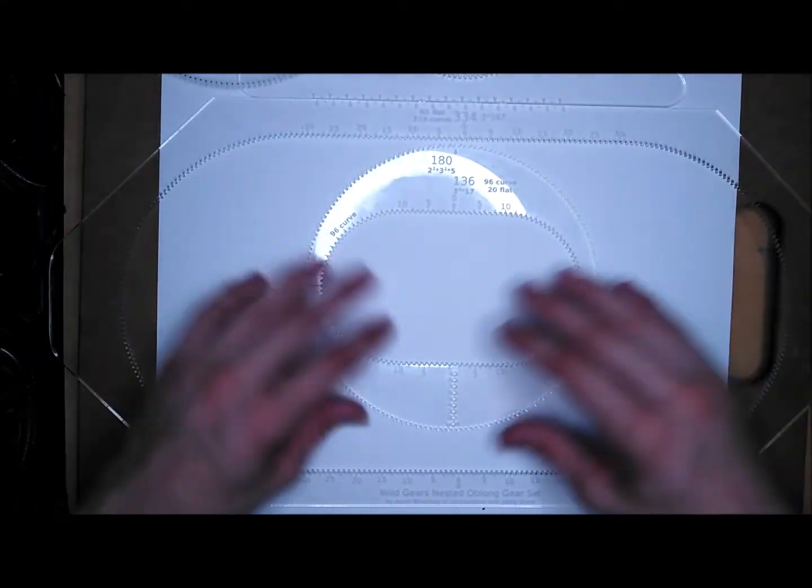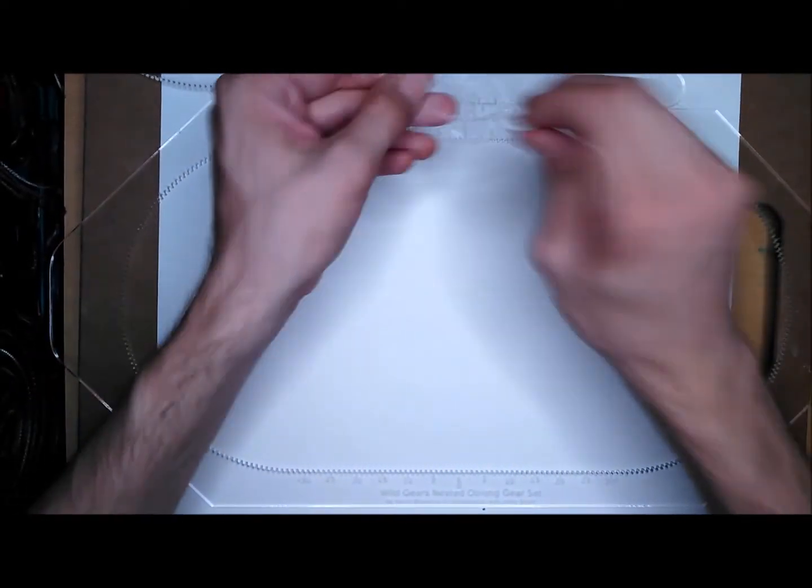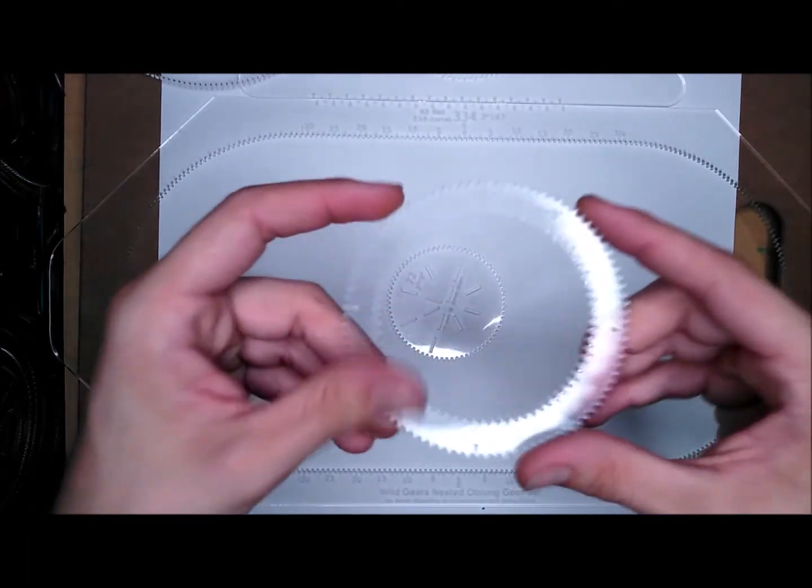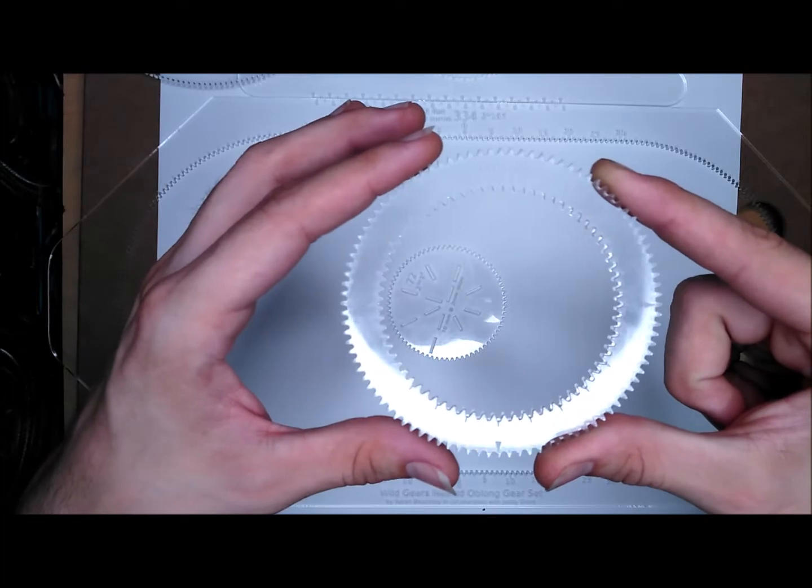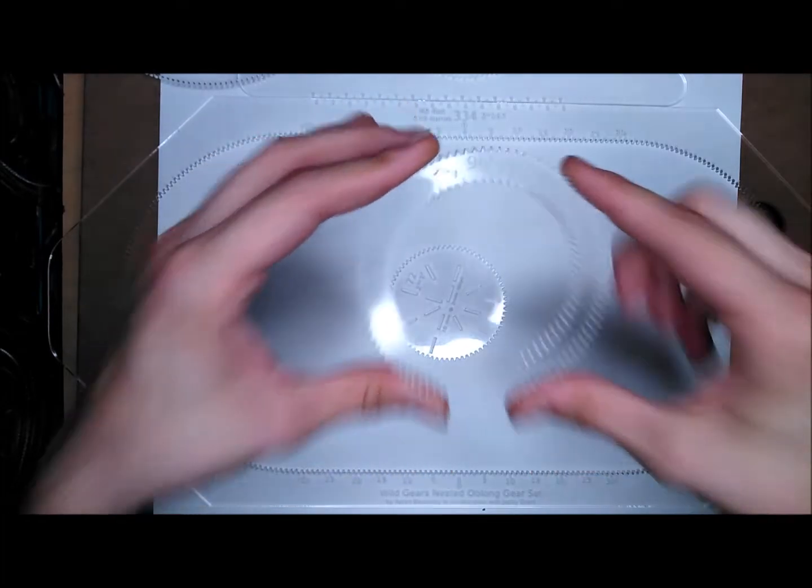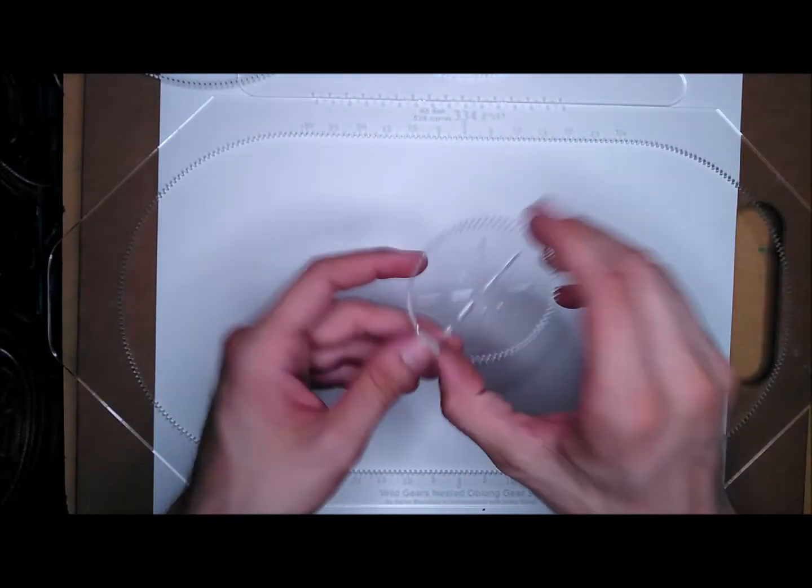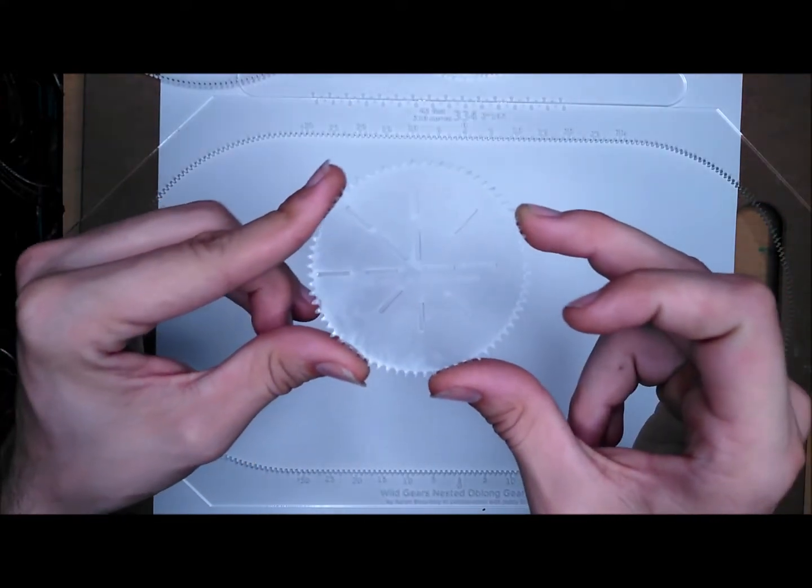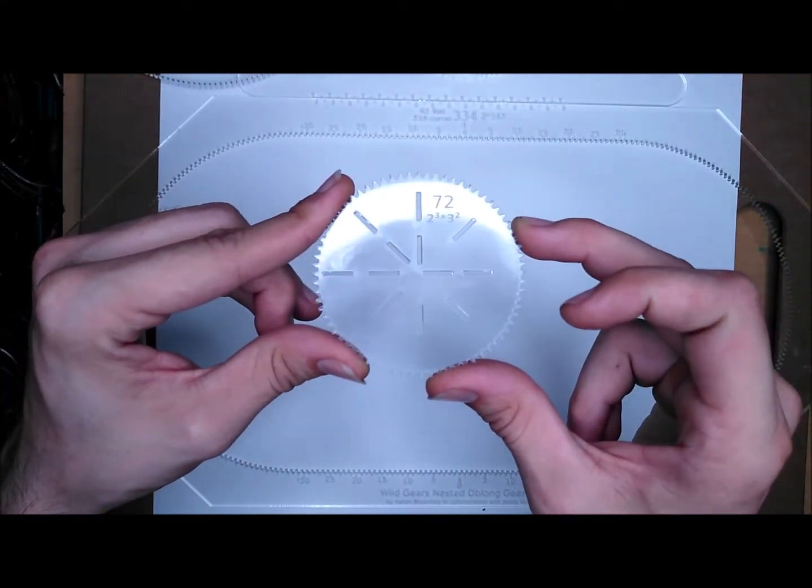And we have a 96-72 ring that you can use within the oblong, the smaller oblong. And a 72 gear with more straight edge attachments for us to do some straight edge designs. Again, I'll show you some of those.